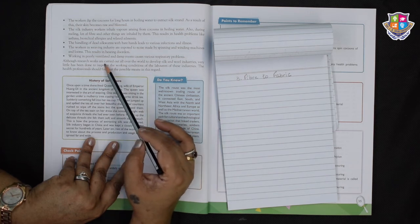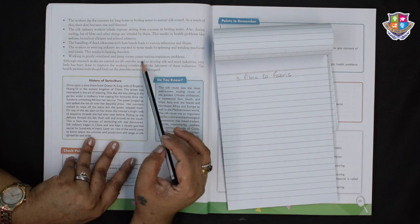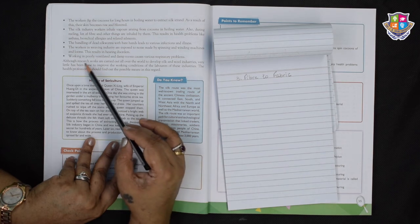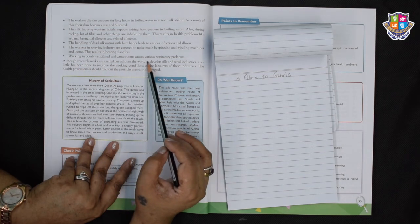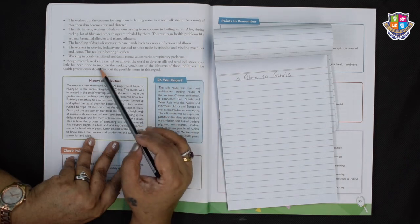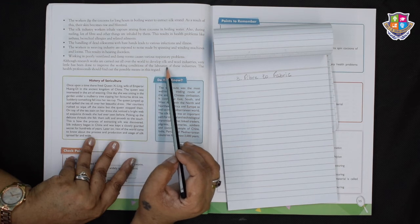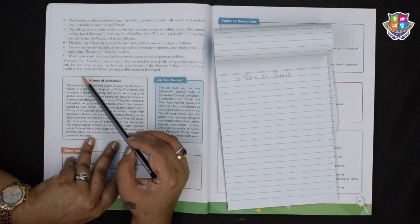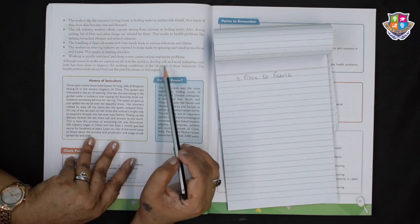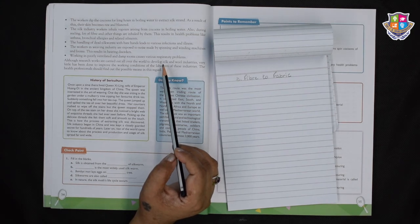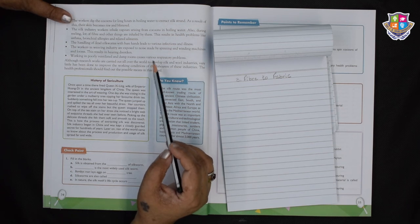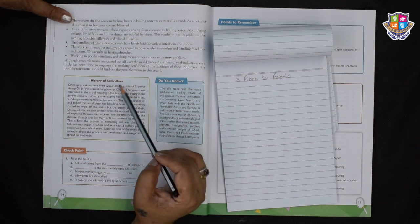Although research is carried out all over the world to develop silk and wool industries, very little has been done to improve the working conditions of the labourers of these industries. The health professionals should find out the possible means in this regard. It is a must for the health professionals to do something about this because it's a really serious problem.